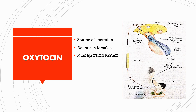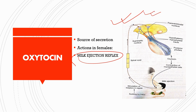Next we have one of the most important hormones — oxytocin — where the most frequently asked question is on the milk ejection reflex. This chart must be included in your answer; you will find it in your textbook as well.